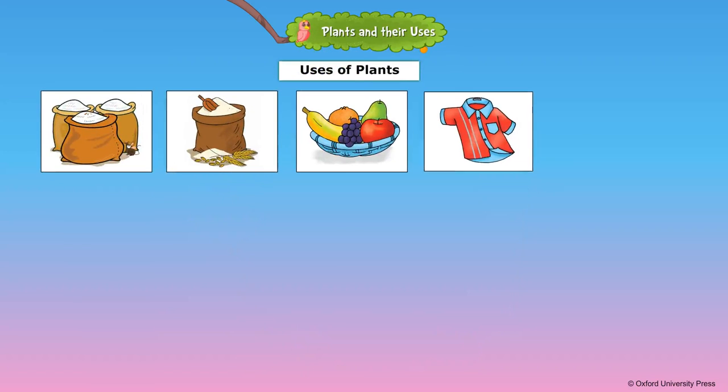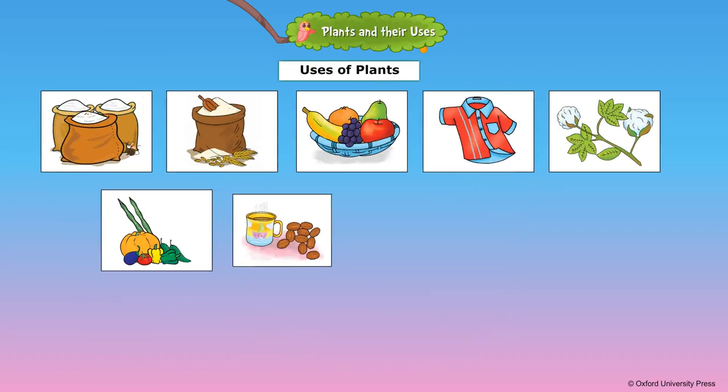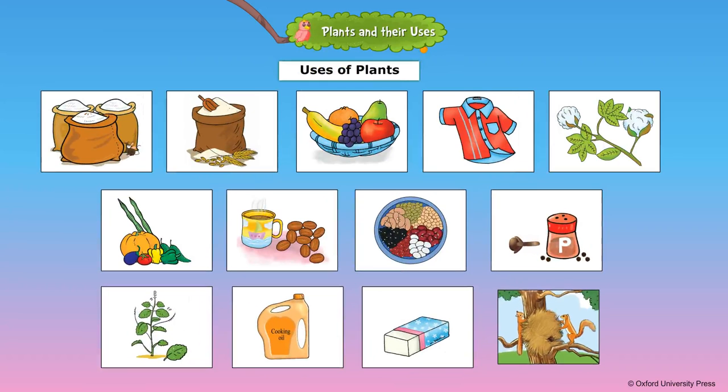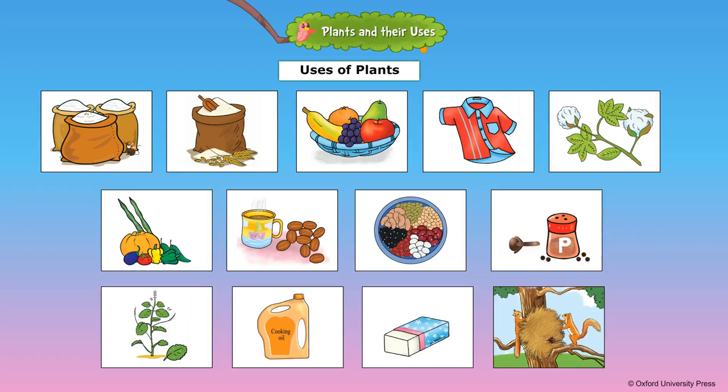Plants are very useful. Plants give us vegetables, fruits, food grains, beverages, medicines, oil, spices, clothing, rubber and so on. Trees are also homes for animals and birds.